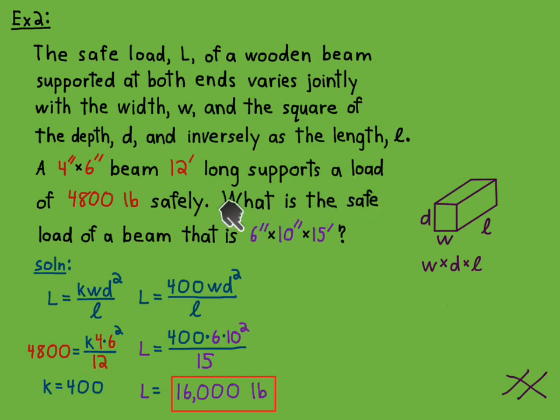But I think this 10 inches depth is going to make a bigger difference than anything else here. That's the d squared. 36 is 6 squared and 100 is 10 squared, see, so quite a bit bigger.